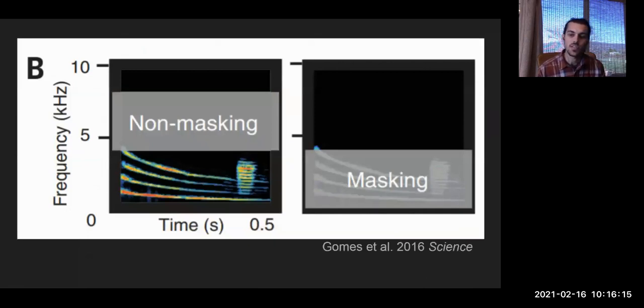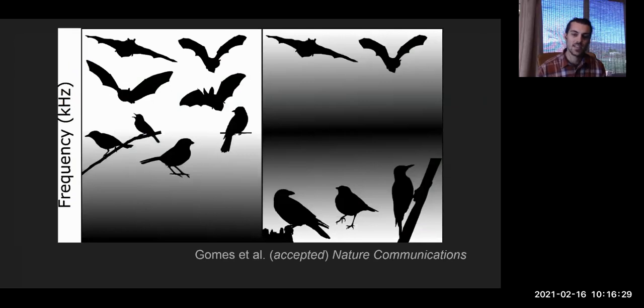Taking the same idea to the community level, we might expect something like this. This is a schematic spectrogram where we're sorting silhouettes of animals based on their vocalization frequency. The dark gray or black bars are representing noise that is either low frequency on the left or somewhat higher frequency on the right. We would expect that noise that overlaps with vocalization frequencies would filter these animals out. The animals might avoid these areas because their signals are masked. Higher frequencies would essentially slice that community in a different place, depending on their vocalization frequency.